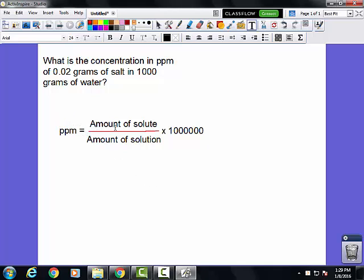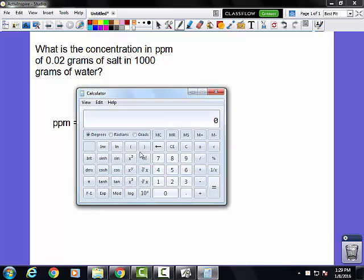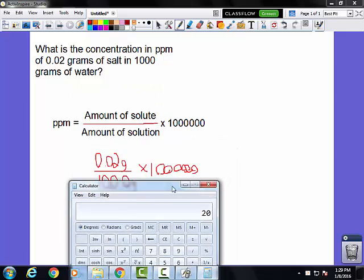If I had 0.02 grams of salt and that is being dissolved in 1,000 grams of water, I multiply that by 1,000,000 to find out the parts per million of my salty water. Pull out your calculator. 0.02 divided by 1,000, that gives you the proportion of salt to water. Then you multiply that by 1,000,000 to find out the actual number of parts per million. In this case, you would have 20 parts per million.